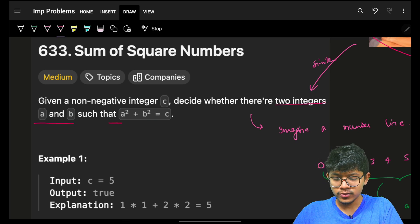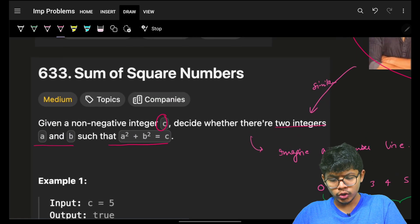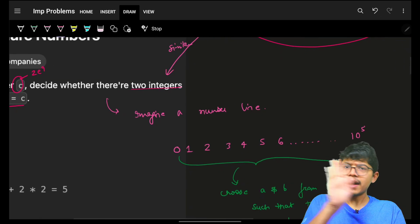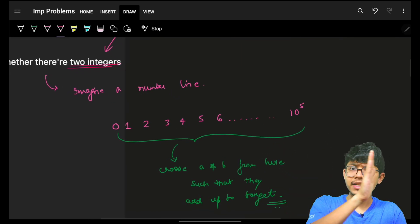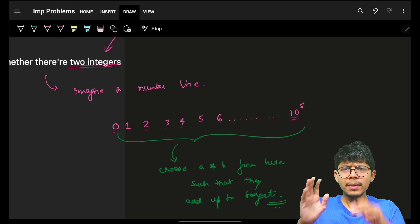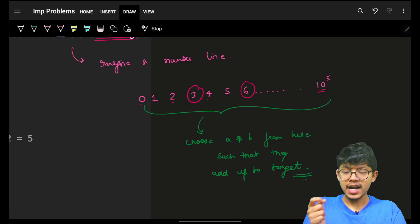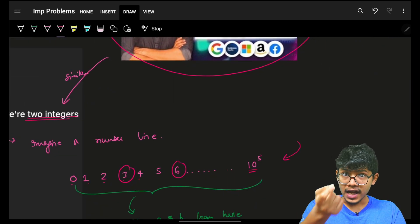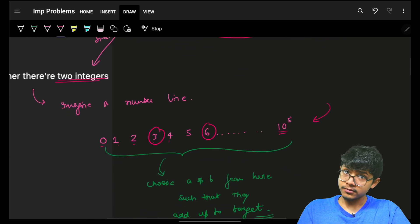We are given integers a and b such that a squared plus b squared equals c. The value of c given in the question is nearly 2×10⁹. Imagine a simple number line from 0, 1, 2, 3, 4 up to 1e5. In that number line, I just have to choose two integers such that their squares sum up to my target — it's the same as saying: given an array, are there two integers who sum up to my target value?